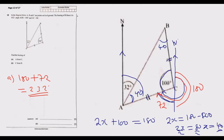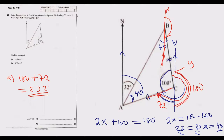Now let's find the bearing of C from B. We stand at B and draw the north line through B. We need to find how many degrees to turn at B to face C. We already know the bearing of B from A is 032 degrees, and the angle ACB is 100 degrees, so we can use these to find the unknown angle at B.